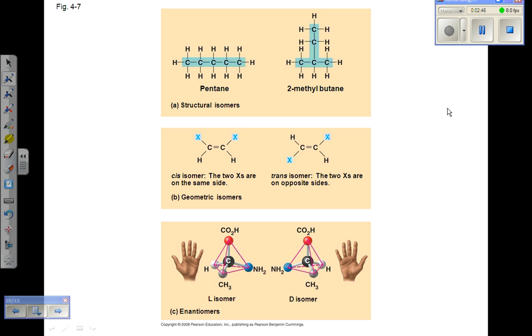Due to carbon's versatility, organic molecules can occur in different variations, or isomers, which are compounds that have the same number of atoms of the same elements, but have different structures. There are three types of isomers of which you should be aware.